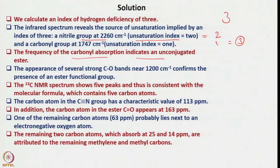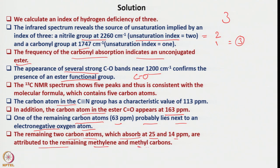The 13C NMR shows 5 peaks consistent with 5 unique carbon atoms. The nitrile carbon appears at 113 ppm, and the ester carbon at 163 ppm. One carbon at 63 ppm probably lies next to an electronegative oxygen atom. The remaining two carbons at 25 ppm and 14 ppm are attributed to methylene and methyl groups, which show a triplet and quartet respectively in the 1H NMR — consistent with an ethyl ester.